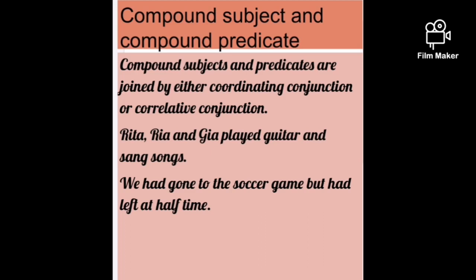'Rita, Ria, and Jia played guitar and sang songs' — here the doers of the action are three persons: Rita, Ria, and Jia — compound subject. And what did they do? They played guitar and sang songs — two actions, so that is a compound predicate. This sentence has both a compound subject and a compound predicate.